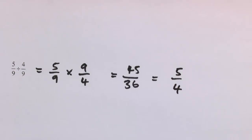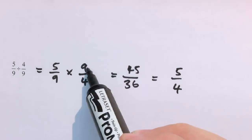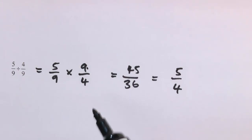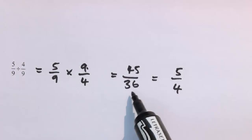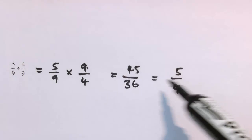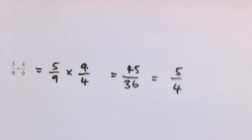If you notice there was a 9 in both places before you multiplied, you may not have had to do that intermediate step. You might have just seen that the 9s were going to cancel top and bottom and gone straight to 5/4. We'll try to do the same sort of thing with algebraic fractions to make things easier.